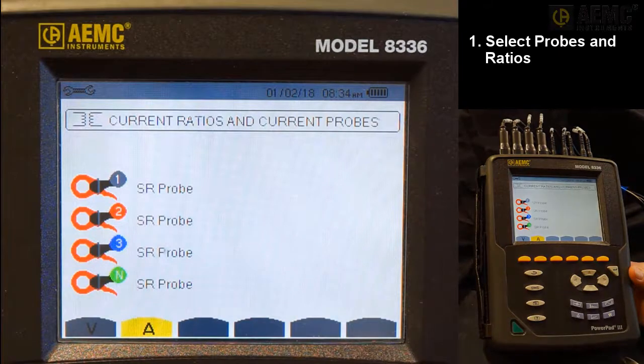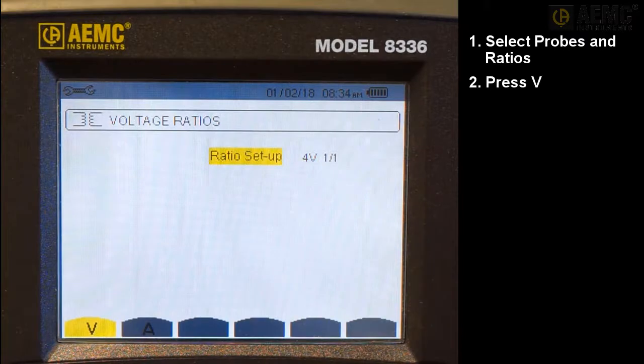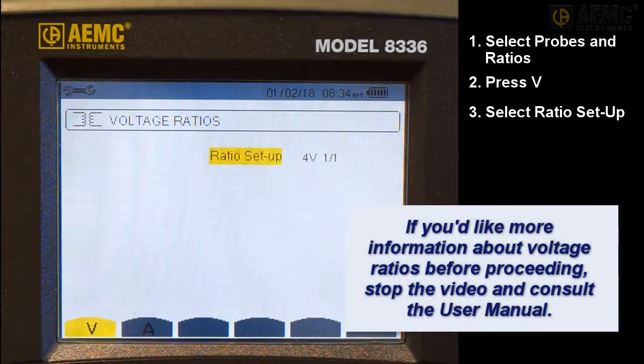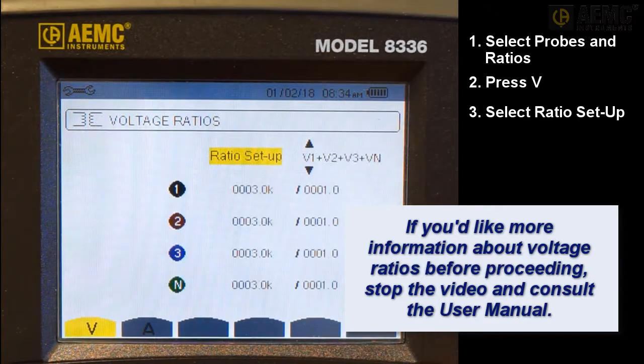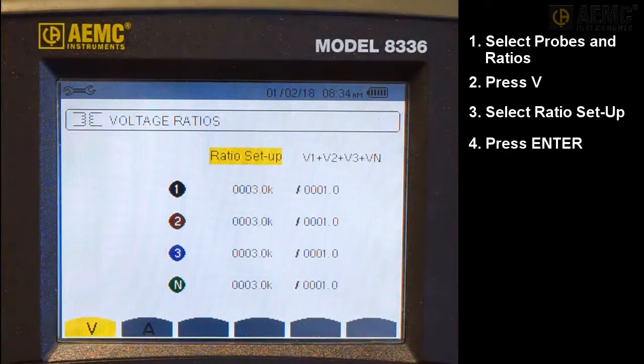This screen lists all connected sensors, which are automatically detected and identified by the instrument. Press the first yellow button on the left, under the V icon, to display the voltage ratios screen. This lets you select the primary to secondary ratio for voltage channels. You can also choose whether to use the same ratio for every line or assign a unique ratio for each. By default, the ratio setup field is highlighted. Press Enter to select this setting and use the arrow buttons to change it. In our demonstration, we will choose to have different ratios for every line. Press Enter to save the selection.